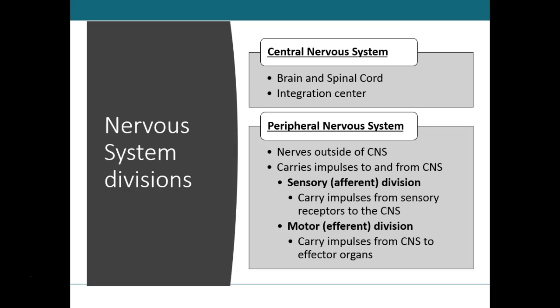All nerves outside the central nervous system carry impulses to and from the CNS. A sensory receptor monitors changes in the internal or external environment and gets that information into the central nervous system for integration. We further divide the peripheral nervous system into sensory and motor divisions. The sensory, or afferent, division — 'A' for admit — brings information from the sensory receptors into the central nervous system. It provides sensory information about somatic senses and special senses such as smell, taste, hearing, vision, and equilibrium.